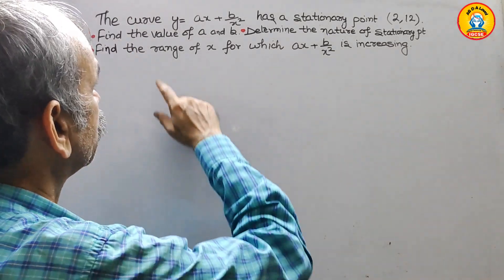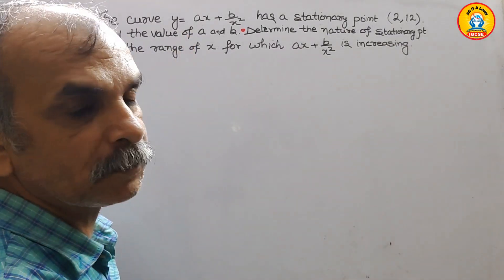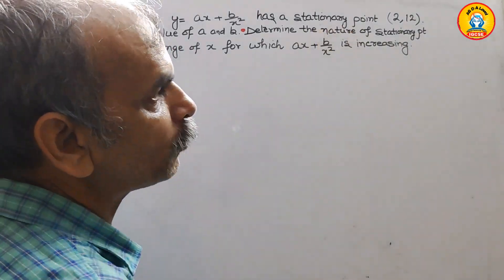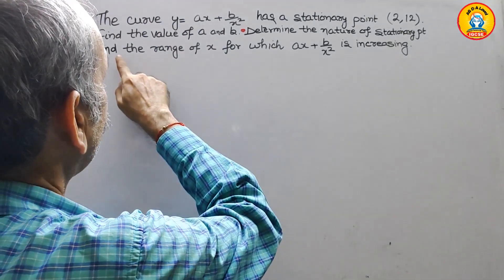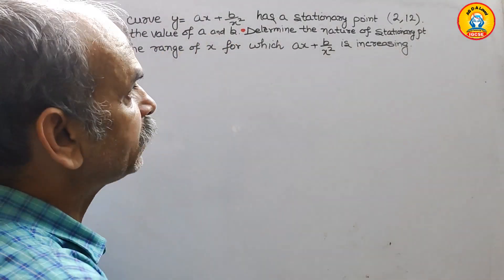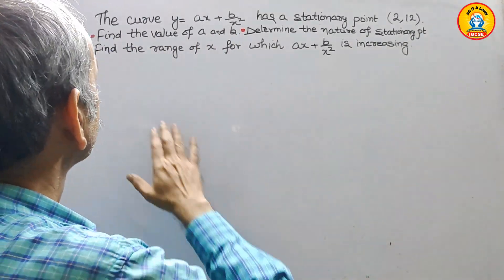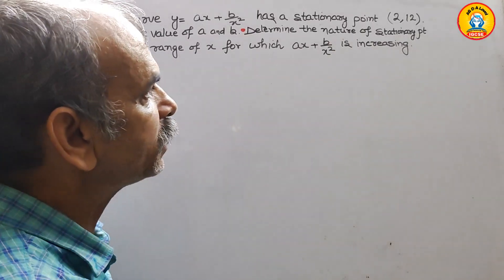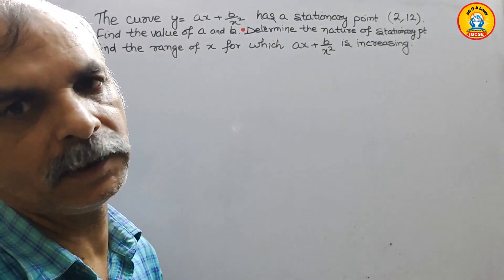The question is: the curve y equals ax plus b over x squared has a stationary point at (2, 12). Find the values of a and b. Second part: determine the nature of the stationary point. Third part: find the range of x for which ax plus b over x squared is increasing.